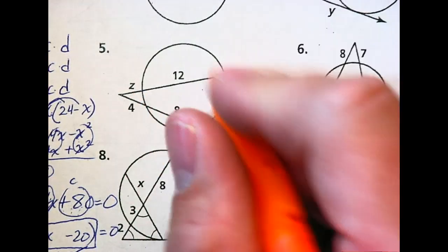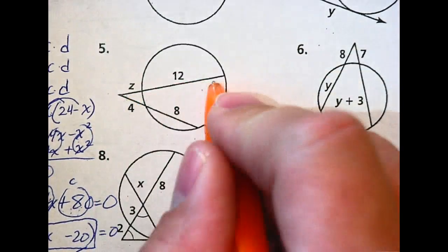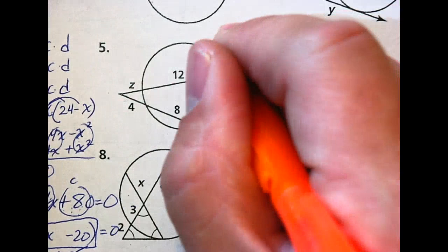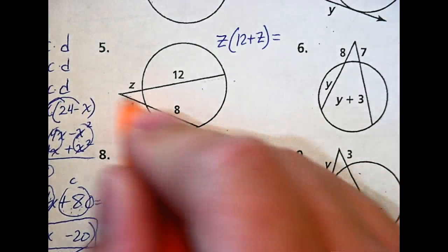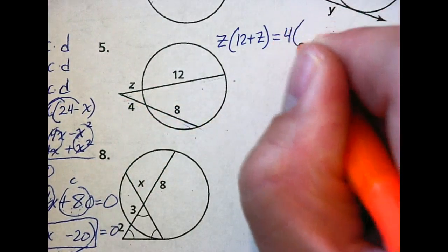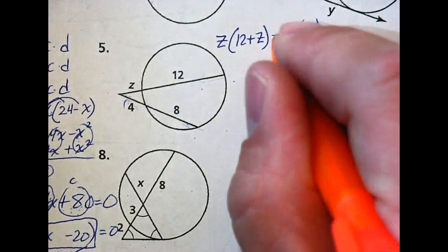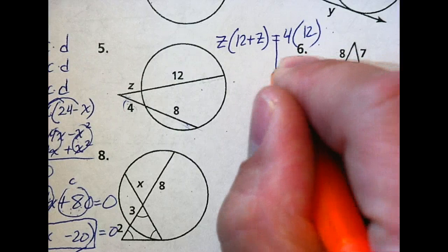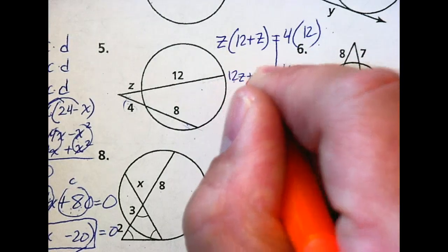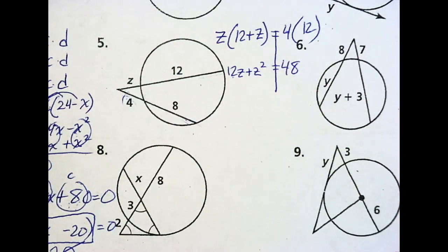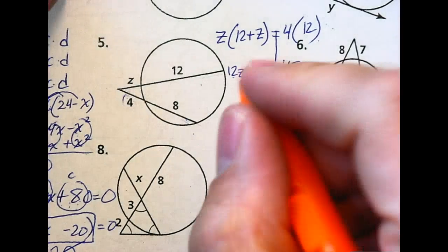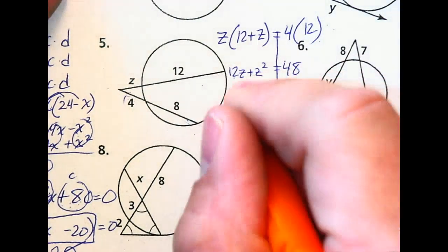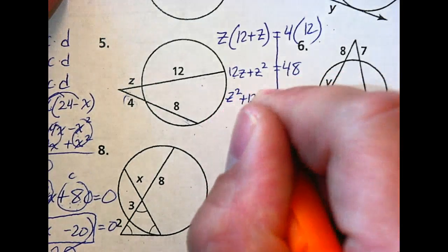On problem 5 we're using the formula: (12 plus z) times z equals 4 times 12. So 12 times 4 is 48, and that equals 12z plus z squared. Once again we get a quadratic — set it equal to zero. Subtract 48 over to get z squared plus 12z minus 48 equals zero.